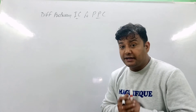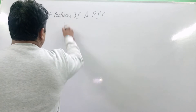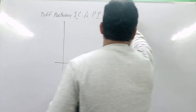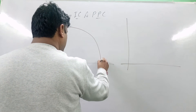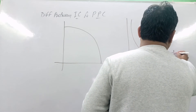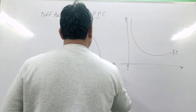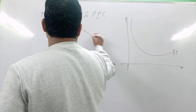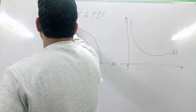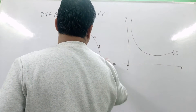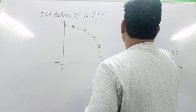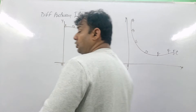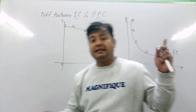To clear the difference between PPC and IC, we need to look at these two diagrams. This diagram is for PPC and this one is for the indifference curve. The PPC shows the combination of two goods that gives the maximum satisfaction at different points, whereas the indifference curve shows the combination of two goods that gives equal satisfaction at different points.